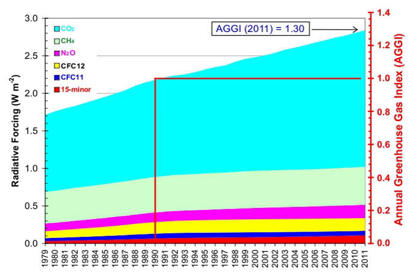Jacob defines the lifetime TAU of an atmospheric species X in a one-box model as the average time that a molecule of X remains in the box. TAU can be defined as the ratio of the mass M of X in the box to its removal rate, which is the sum of the flow of X out of the box, chemical loss of X, and deposition of X.